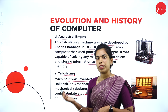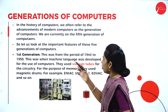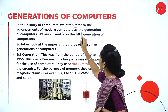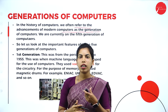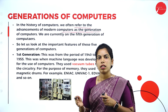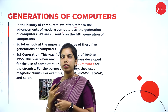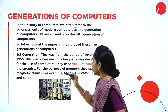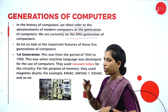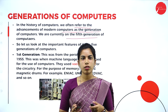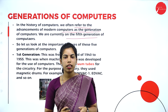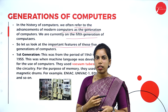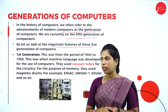In the next slide, see the generations of the computer. In the history of computers, we often refer to the advancement of modern computers as generations. How the computer will be advanced generation by generation - how it looks in a modern way. We are currently in the fifth generation, which is artificial intelligence. There are five generations under the generations of the computer.